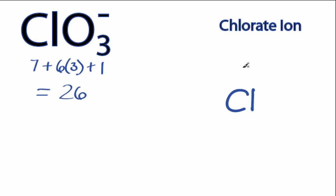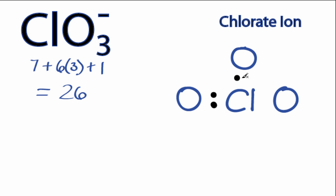Chlorine is the least electronegative, so that goes in the center, oxygens around it. We use 2 valence electrons to form chemical bonds between the atoms. We've used 6, then around the outside atoms.